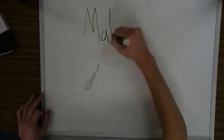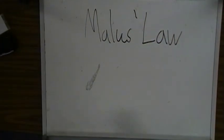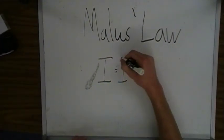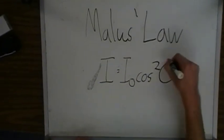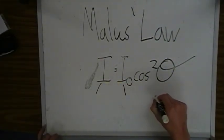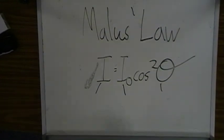For instance, how strong the light comes out after it goes through the polarizer. And this leads us to Malus's law, which states that the final intensity is equal to the original intensity multiplied by the cosine squared of the angle at which it enters the polarizer.